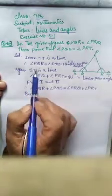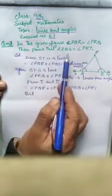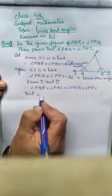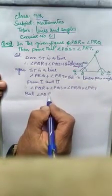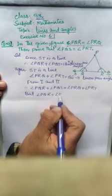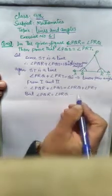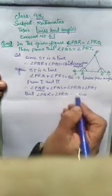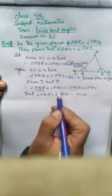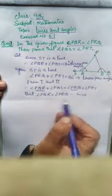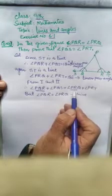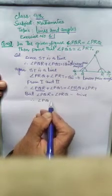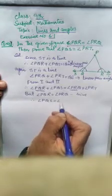But we're given that angle PQR equals angle PRQ. Therefore, angle PQS equals angle PRT. This completes the proof.